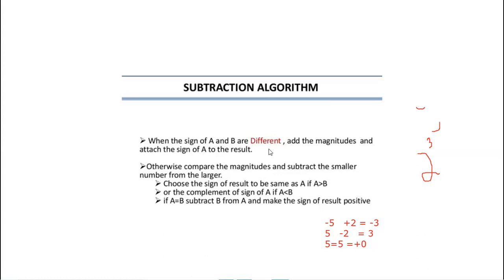When the sign of A and B — the sign bit being the most significant bit — are different, that means one is plus and one is minus. So add the magnitudes and attach the sign of A to the result. Otherwise, compare the magnitudes and subtract the smaller number from the larger. Choose the sign of the result to be the same as A if A is greater than B, the complement of the sign if A is less than B, and if A equals B, subtract B from A and make the sign of the result positive.